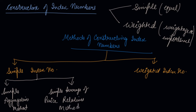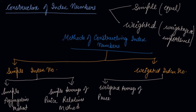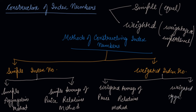For the construction of weighted index number, there are again two methods. Number one is your weighted average of price related method, and number two is your weighted aggregator method.